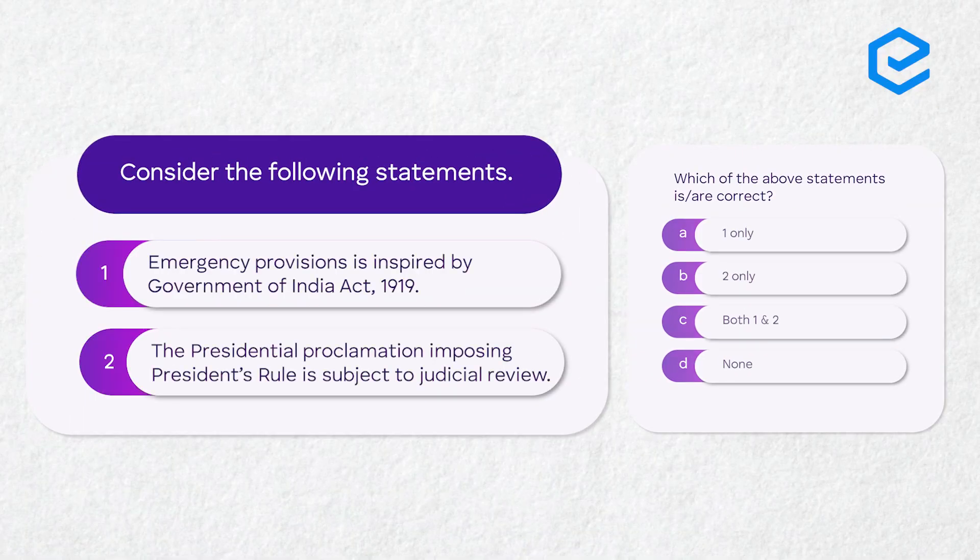Moving on to the next question. Consider the following statements. Statement one: emergency provisions are inspired by the Government of India Act 1919. Statement two: the presidential proclamation imposing President's Rule is subject to judicial review. Identify which statements are correct — one only, two only, both one and two, or none of the above.